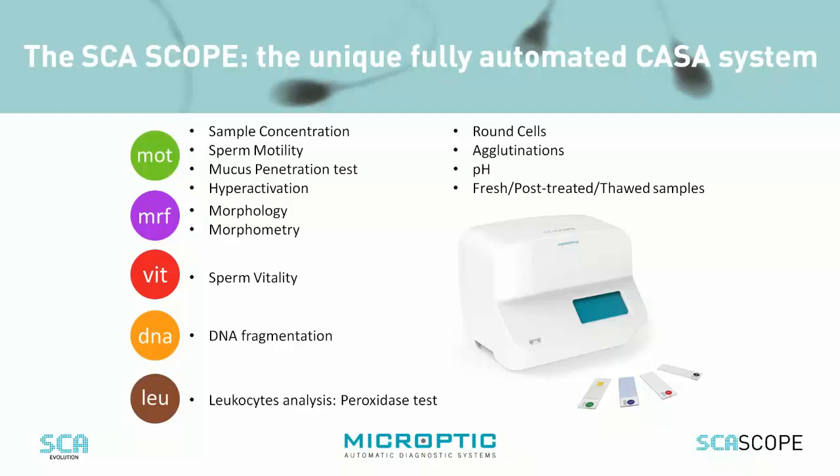At the same time, it is important to assess sperm vitality, especially when there is poor motility. IVF clinics need to rescue as many cells as possible, so when there is poor motility it is important to evaluate from these immotile cells how many are alive or dead. On the same way that we evaluate membrane integrity with a vitality test, we can also test for DNA fragmentation on these sperm cells.